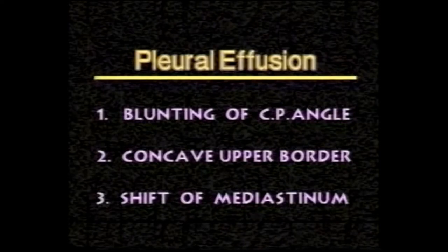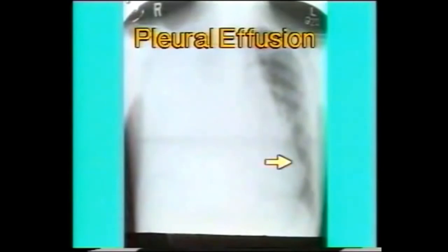This is a very massive effusion with complete opacity of the right side and shift of the mediastinum to the opposite side. Note the shift of the heart to the left side. When the opacity is complete and a concave upper border is not seen, shift of the mediastinum to the opposite side is very suggestive of a pleural effusion.